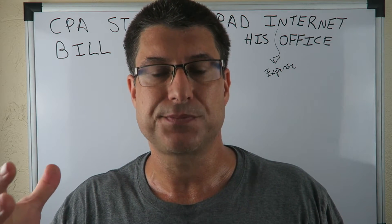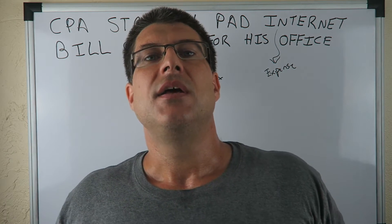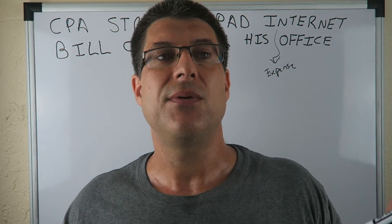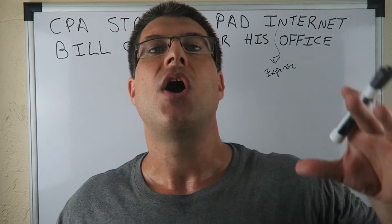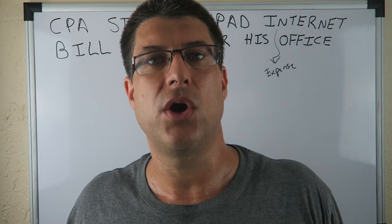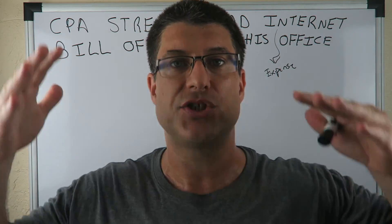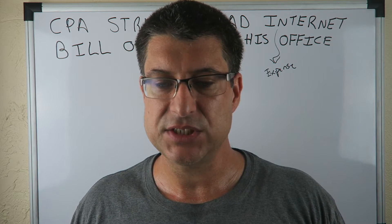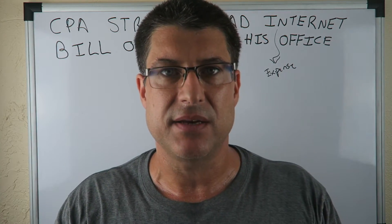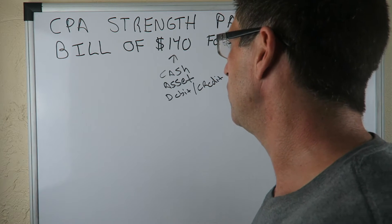Most every journal entry in real life and on tests is going to have cash involved. So if you're taking a test with 10 questions, I'd say seven or eight of those journal entries are going to have cash either coming in or leaving. If you can follow what the cash is doing, you'll have half of your journal entry done already.